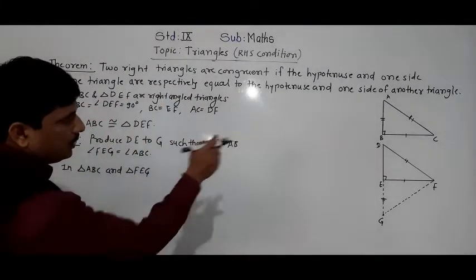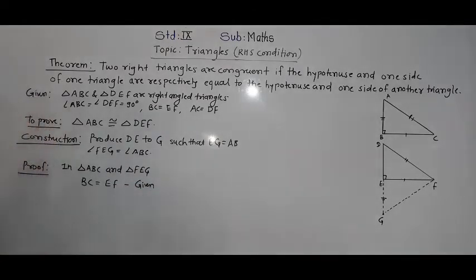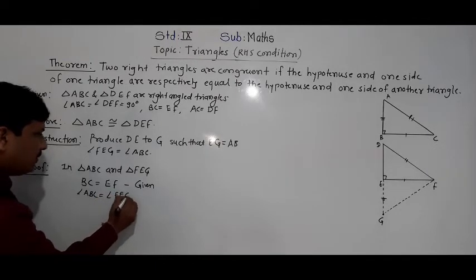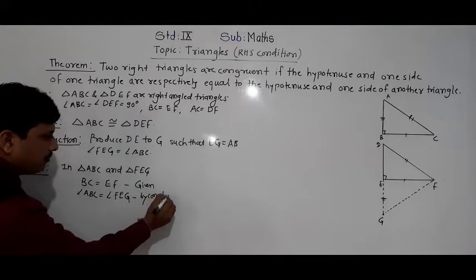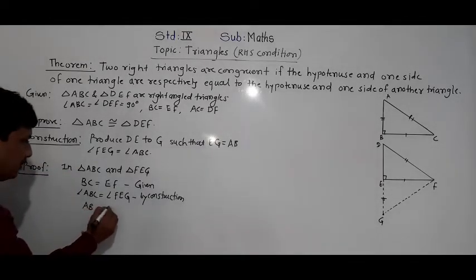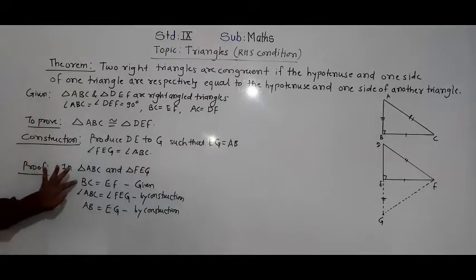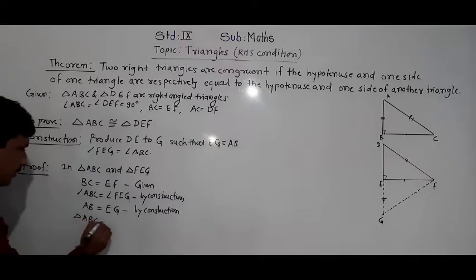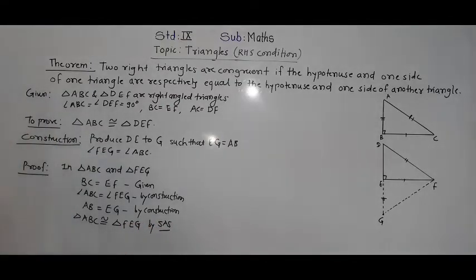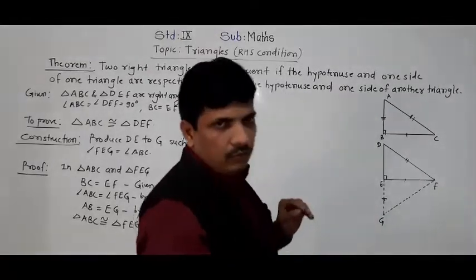So triangle ABC is congruent to triangle FEG by SAS criteria. So one part of our answer is completed here — triangle ABC and triangle FEG are congruent.